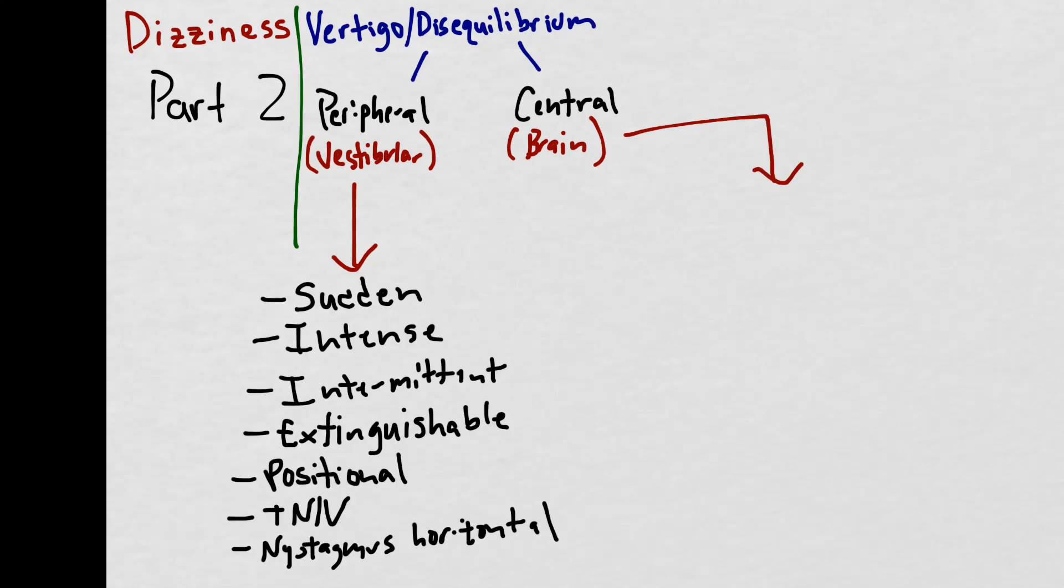Peripheral vertigo is characterized by the sudden onset of very intense intermittent extinguishable and positional symptoms of dizziness or feeling like the room is spinning or if you're on a boat or if you were drunk. These patients are very sick and have a lot of nausea, vomiting, and diaphoresis and they can also exhibit horizontal nystagmus, specifically unidirectional horizontal nystagmus.